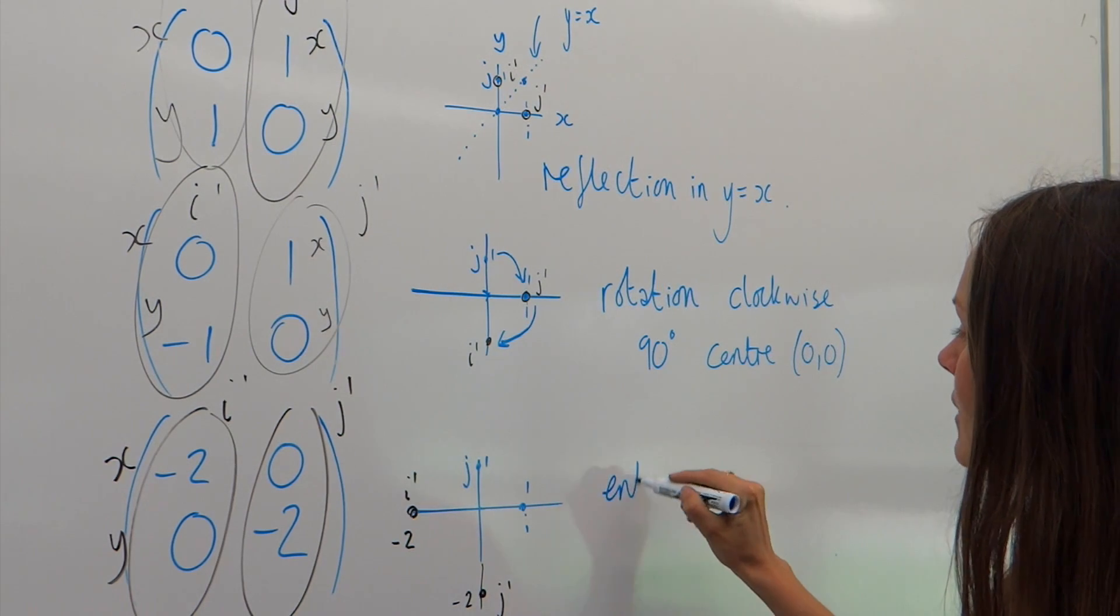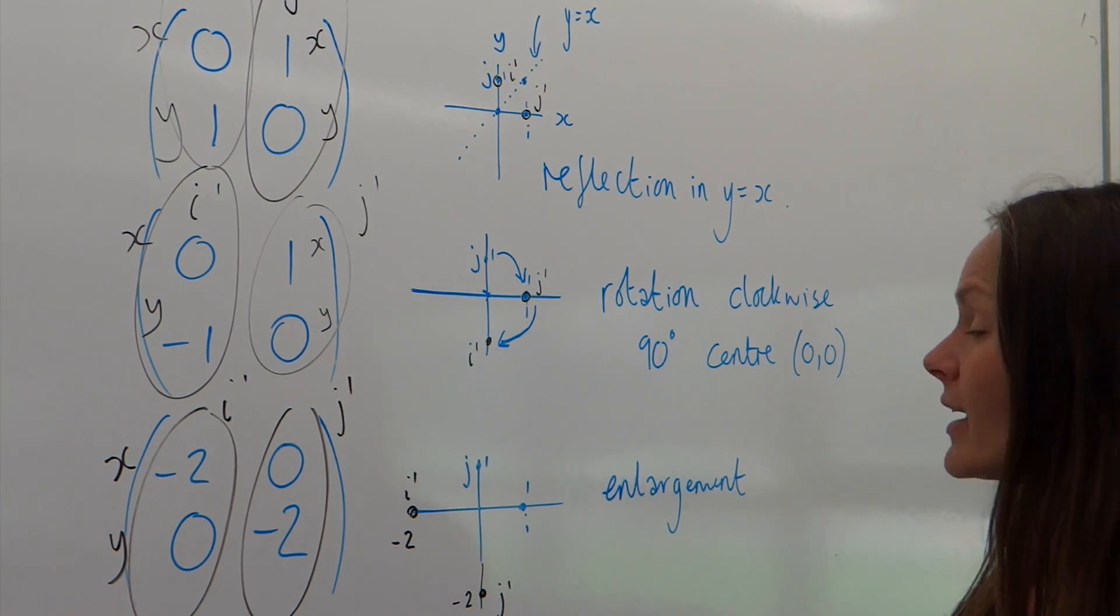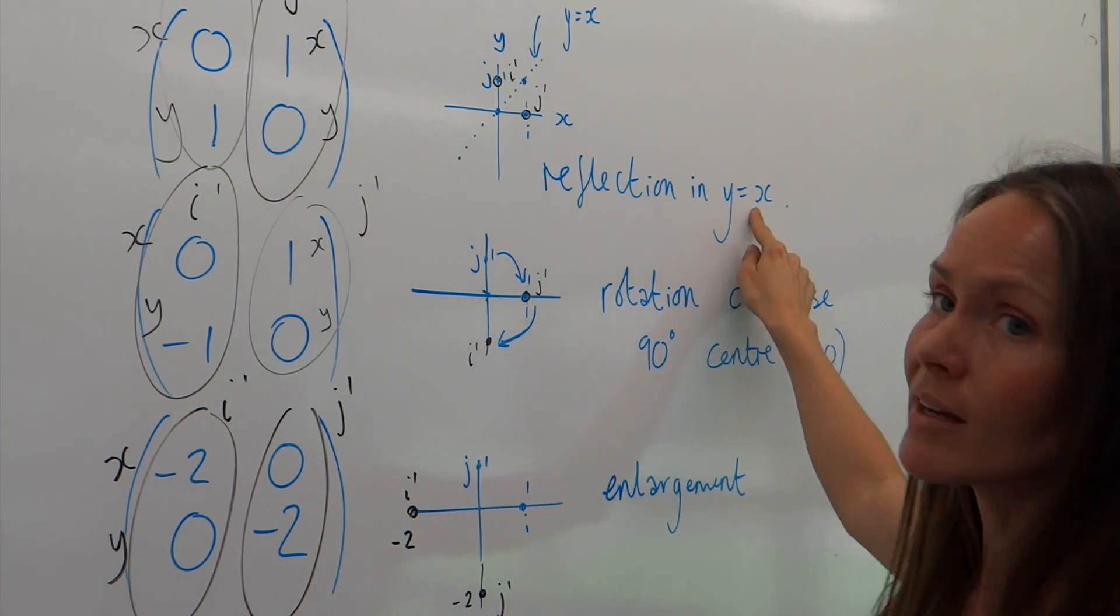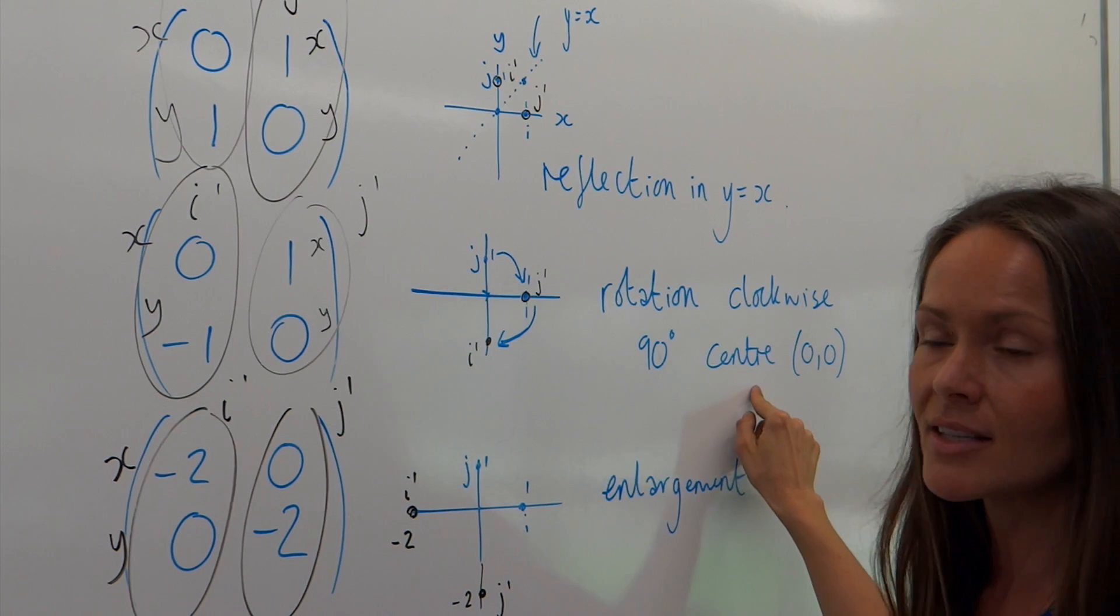That means it's going to be an enlargement. So, I'm going to write down the word enlargement. But again, we need to give enough information. Here, we had to write the mirror line. Here, we had to write the direction, the degrees, and the centre point.